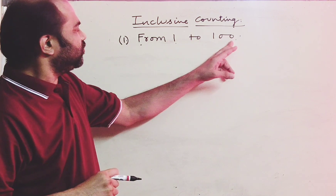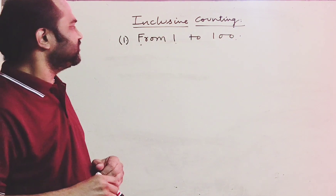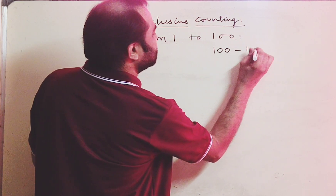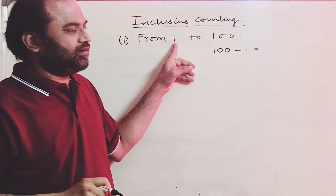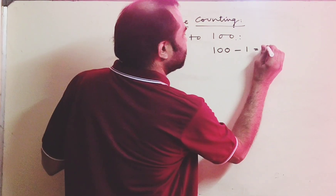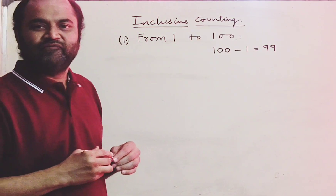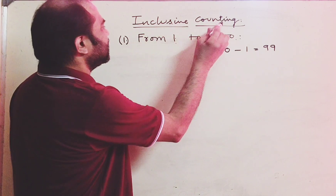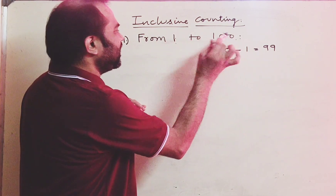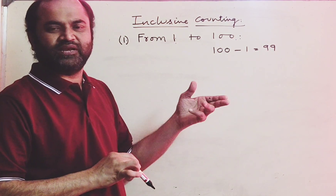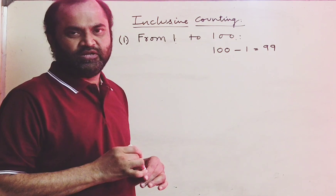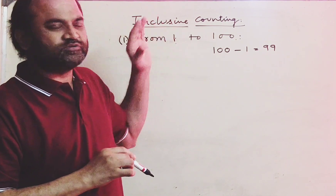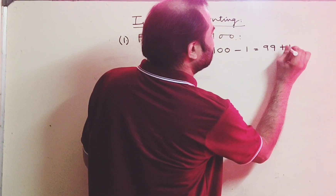The method of finding the number of numbers from 1 to 100 determines the principle of inclusive counting. To find that, first you find the difference of the first and the last numbers. The last number is 100, the first number is 1. Find the difference of these two numbers — that gives 99. Inclusive counting means counting both 1 and 100 and also the integral numbers which exist between them. To find the number of integral numbers from 1 to 100, find the difference and add 1 to that difference.